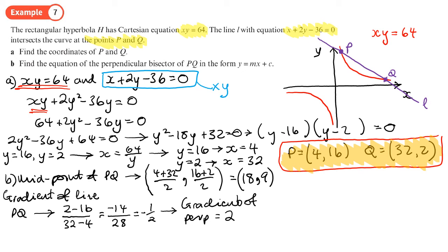So I've got the gradient and a point that it passes through, so I'm almost there now in terms of writing the equation of the line. It's going to be in the form y equals mx plus c, so I've got y equals gradient 2x plus c. Let me substitute in the point (18, 9) to work out what c is. So it'll be 9 for y equals 2 times 18 plus c.